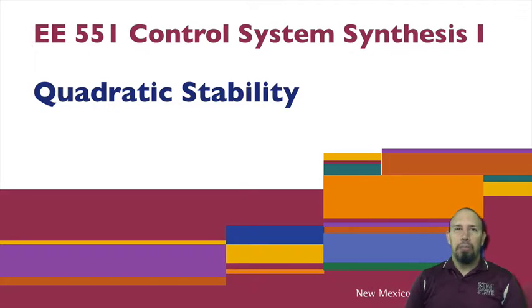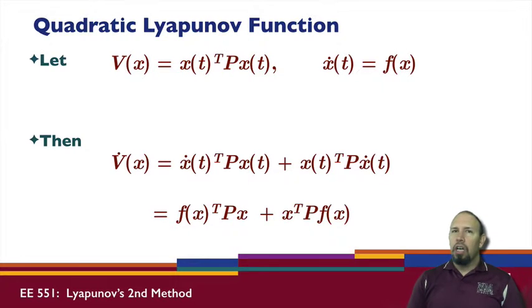So we've talked about asymptotic stability, and asymptotic stability was something we could examine using Lyapunov's second method. Now we can actually continue on using Lyapunov's second method and look at the more strict stability property of both quadratic and exponential stability.